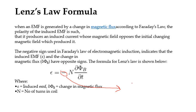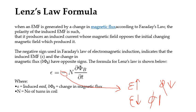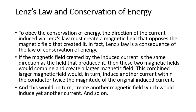You can see that if epsilon is increasing, then Φ (phi) will be decreasing. Similarly, suppose epsilon is decreasing — it means your Φ (phi) is increasing. They are opposite to each other. Conservation of energy is again an important thing to analyze.